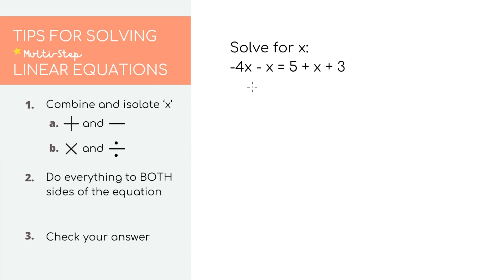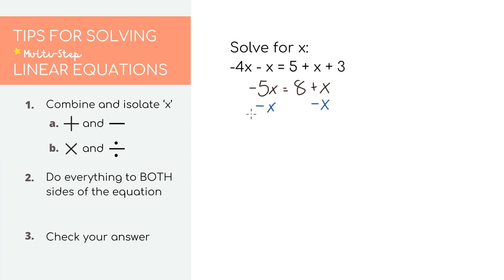Here we have negative 4x minus x equals 5 plus x plus 3. Let's first combine like values. On the left, negative 4x minus x equals negative 5x. On the right, we can combine 5 plus 3 and we'll end up with 8 plus x. This is another two-step linear equation — we want to get all of the x's on one side and all of our numbers on the other. Since we have 8 plus x, we subtract x from both sides. We have negative 5x minus x, which is negative 6x. x minus x cancels out, leaving negative 6x equals 8.